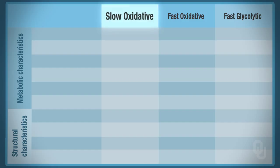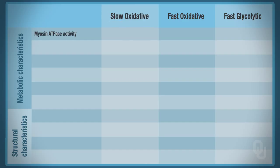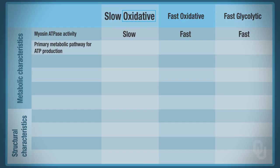Starting with slow oxidative: 'slow' refers to how fast the myosin ATPase is able to hydrolyze ATP. So the myosin ATPase activity is slow, versus in a fast glycolytic fiber it's fast, and in a fast oxidative fiber it's fast as well. The primary metabolic pathway for ATP in the slow oxidative form is oxidative.